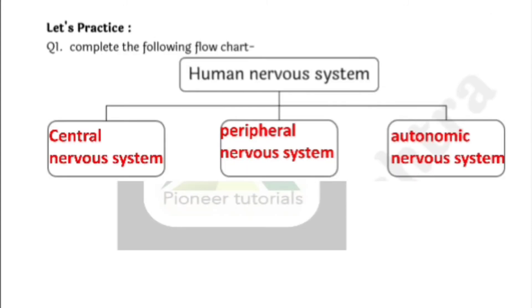Question Number 1. Complete the following flow chart. Yes, on the top it is human nervous system. The human nervous system is classified or divided into 3 parts. That is, first one is Central Nervous System. Second is Peripheral Nervous System. And third is Autonomic Nervous System. Let's see the next question.